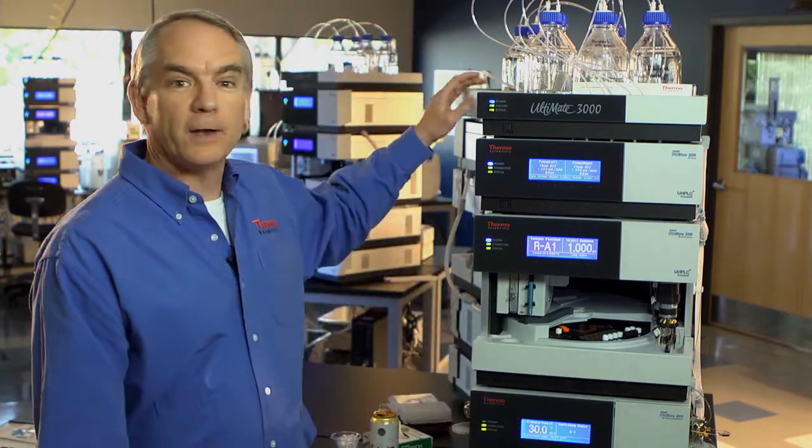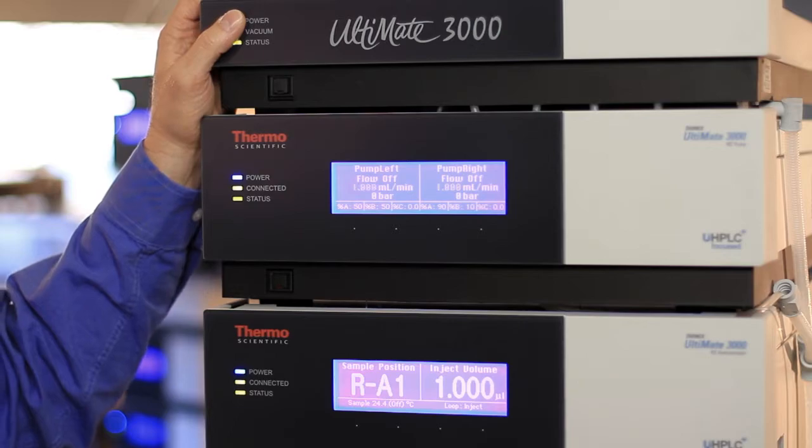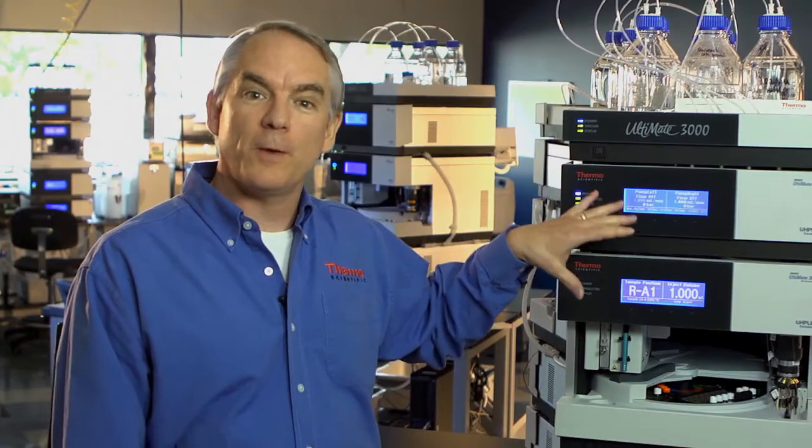The platform they're using for that is the Thermo Scientific Ultimate 3000 UHPLC Plus system. Before we open up the instrument, let's take a step back and think about what the quality control chemist has to do in the brewing laboratory.